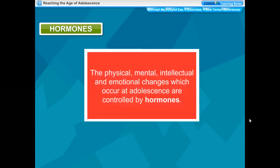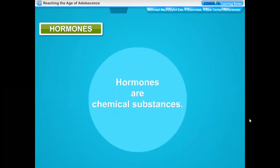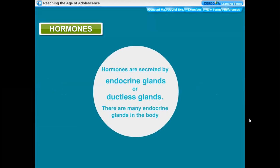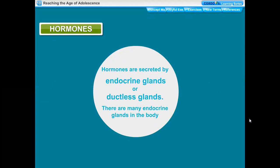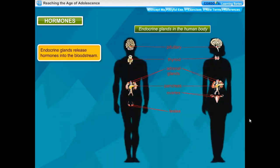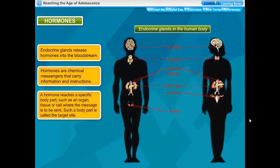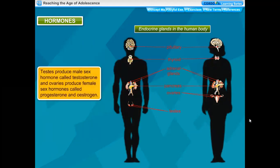Hormones: the physical, mental, intellectual, and emotional changes which occur at adolescence are controlled by hormones. Hormones are chemical substances that act as messengers, hence they are also called chemical messengers of the body. Hormones are secreted by endocrine glands or ductless glands. Endocrine glands release hormones into the bloodstream. A hormone reaches a specific body part — such as an organ, tissue, or cell — where the message is to be sent. Such a body part is called the target site, and the target site responds to the hormone.